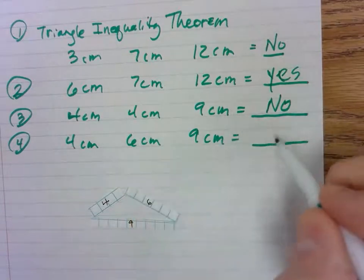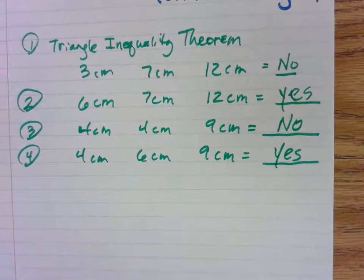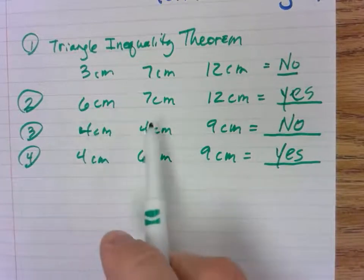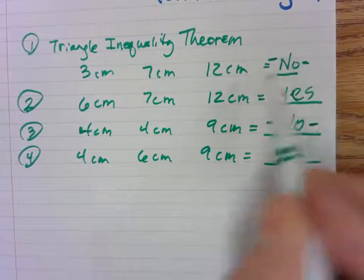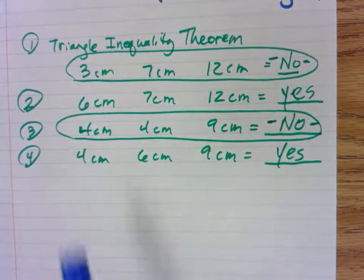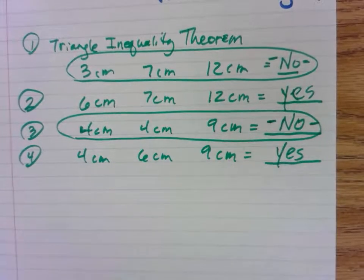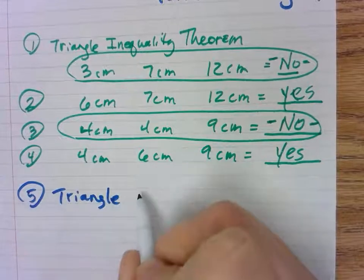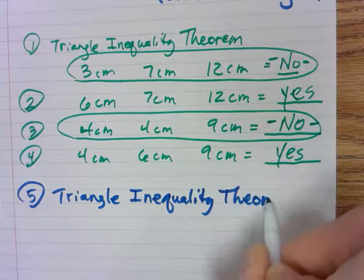Now let's look at our nos and yeses. The nos were: three, seven, and twelve — no. And four, four, and nine — no. The yeses were: six, seven, and twelve — yes. And four, six, and nine — yes. There is a relationship here that we call the Triangle Inequality Theorem. Go ahead and write that down: Triangle Inequality Theorem. There is clearly a relationship going on between the smaller sides and the larger side.